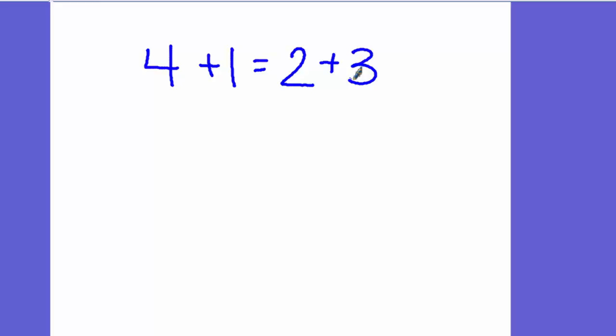First thing you need to remember is that equal means the same. Everything on this side of the equation needs to be exactly the same as what's on this side of the equal sign. So we should read this number sentence as 4 plus 1 is equal to or the same as 2 plus 3.